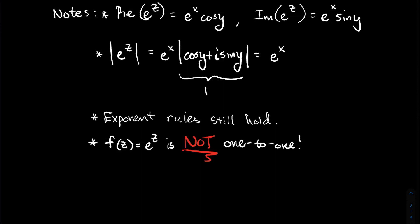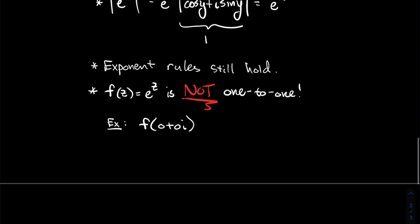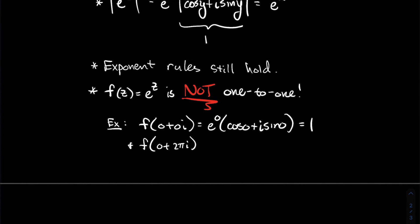Here's something different from the real exponential: the complex exponential is not one-to-one anymore. For example, plugging in 0 + 0i gives e⁰ · (cos 0 + i sin 0) = 1. But plugging in 0 + 2πi gives e⁰ · (cos 2π + i sin 2π) = 1 as well. Two different inputs give the same output, so the function is not one-to-one.